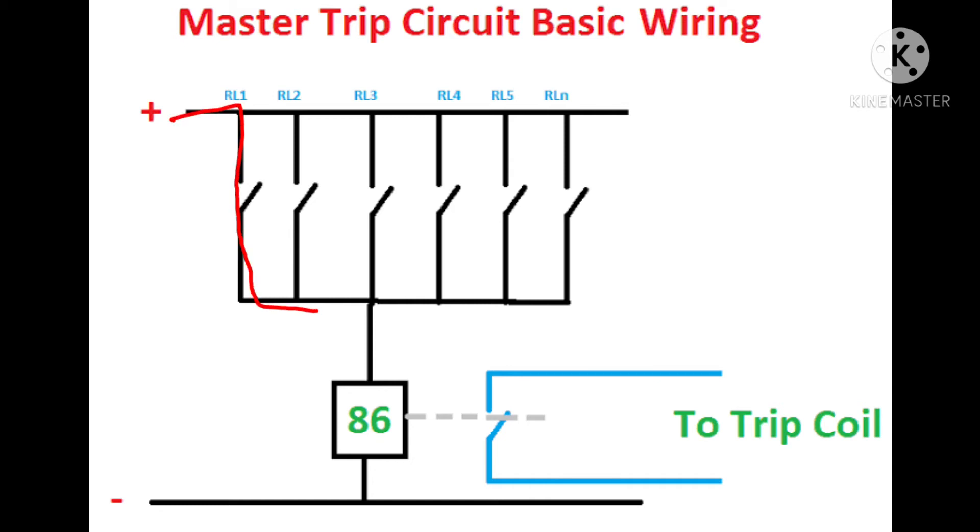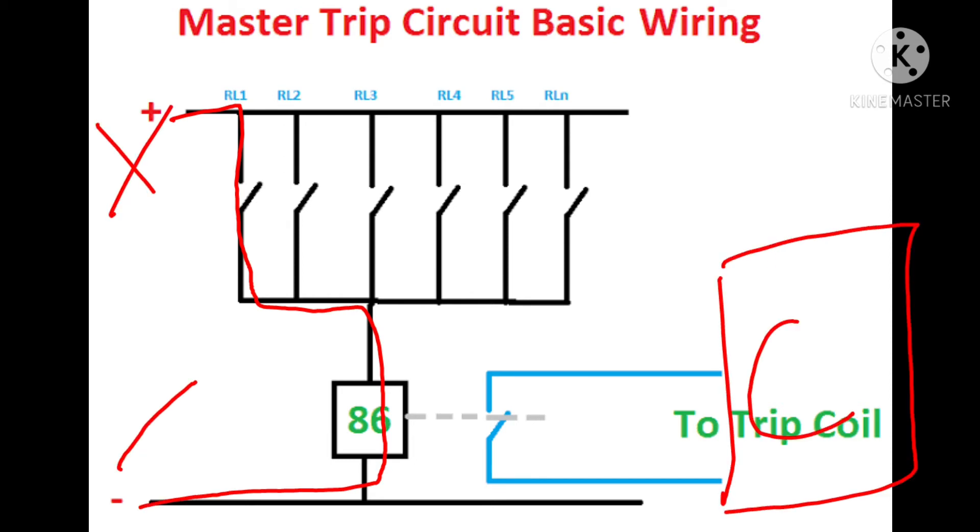Now when any of them is operated, the master trip relay gets command from that individual protective relay and gives a tripping command to the trip coil, that is, the circuit breaker.